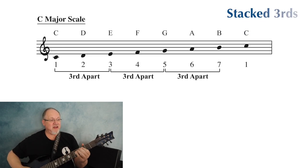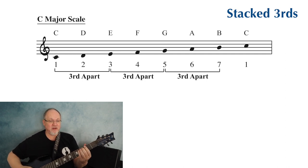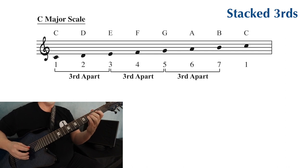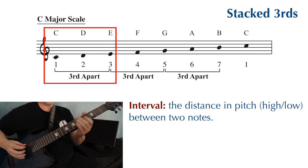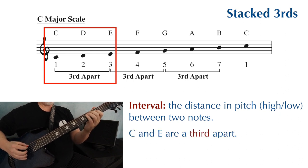Here's a C major scale, and the notes are numbered below by scale degree. C is one, D is two, three, four, five, six, seven, and then the C an octave higher is one again. From C to E, we count three notes — C, D, E — and C and E are a third apart.